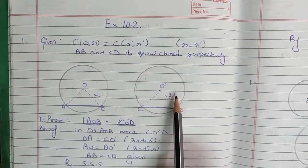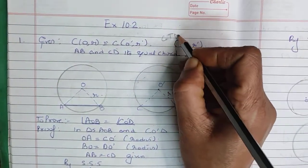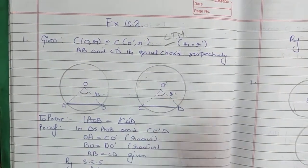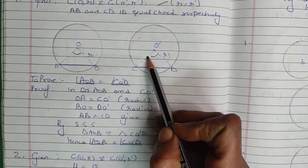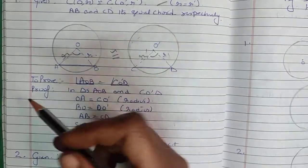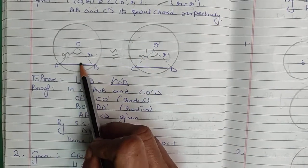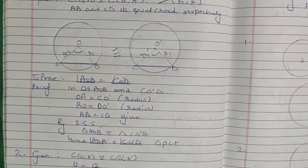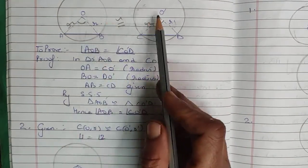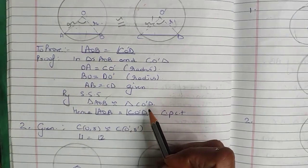We take two congruent circles: one with center O and radius r, and another with center O' and radius r'. Since both circles are congruent, both radii are equal — commit this point to memory. We are given two equal chords. The radius sides of both triangles are equal. By SSS congruency rule, both triangles are congruent, and their corresponding angles are equal. So angle AOB equals angle CO'D is proved.